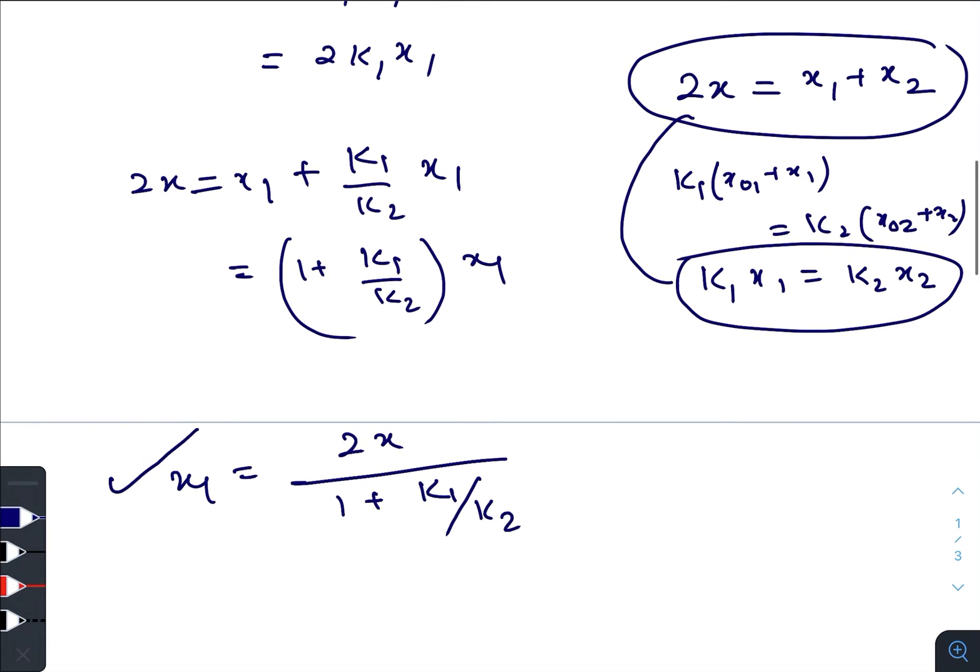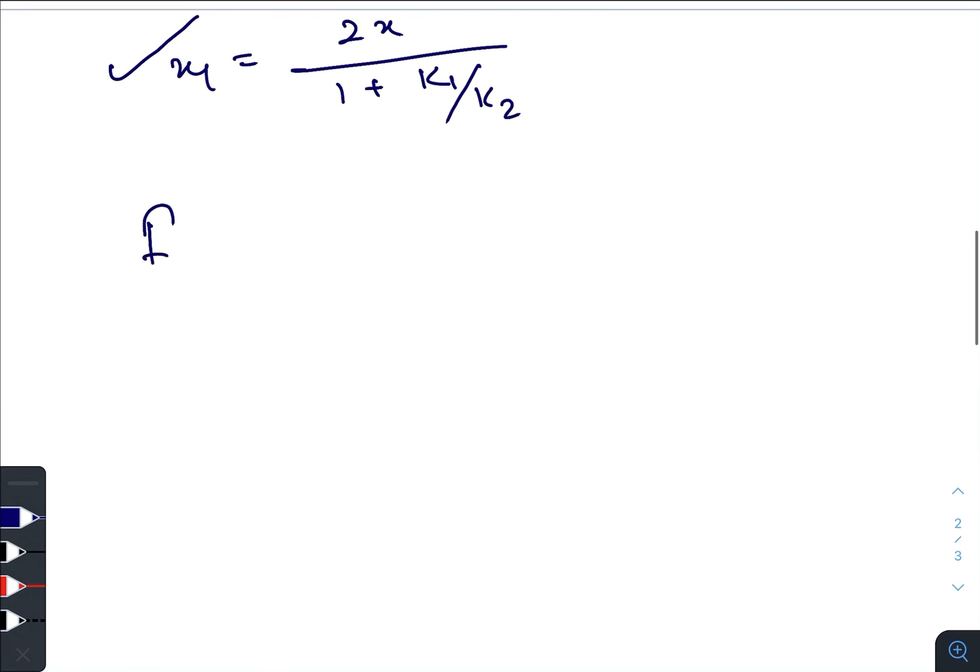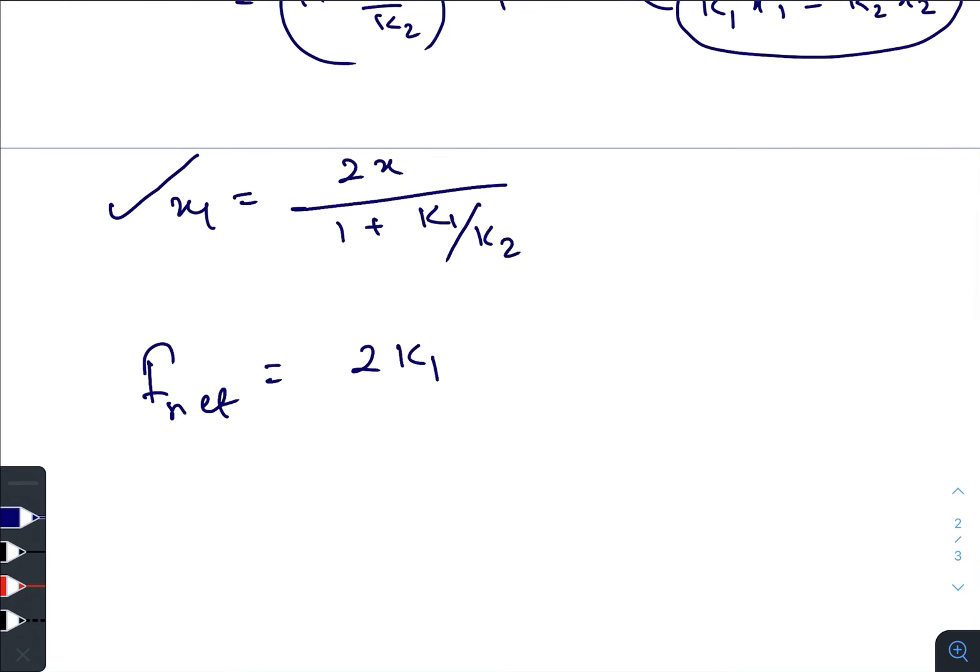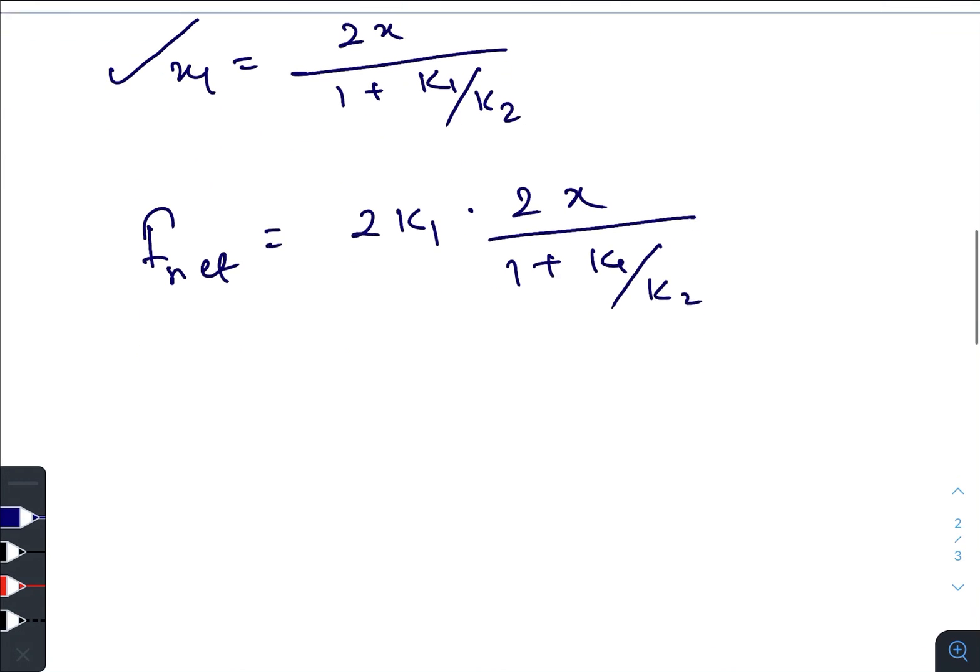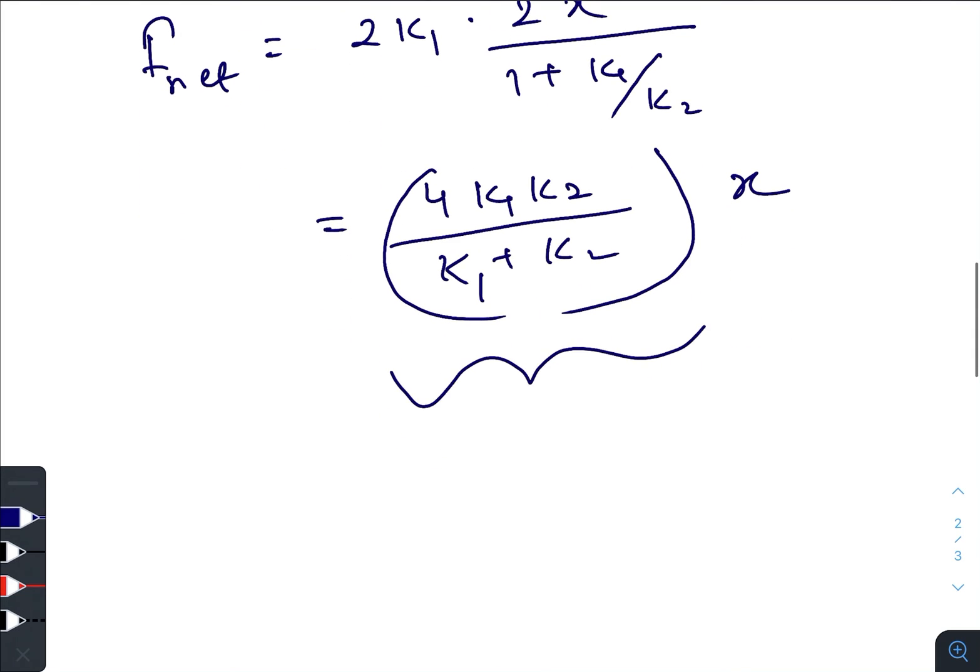We can use this value in the equation of F_net. F_net is equal to 2k₁ times 2x divided by (1 + k₁/k₂). So the final expression becomes (4k₁k₂)/(k₁ + k₂) times x. This is our k_equivalent.